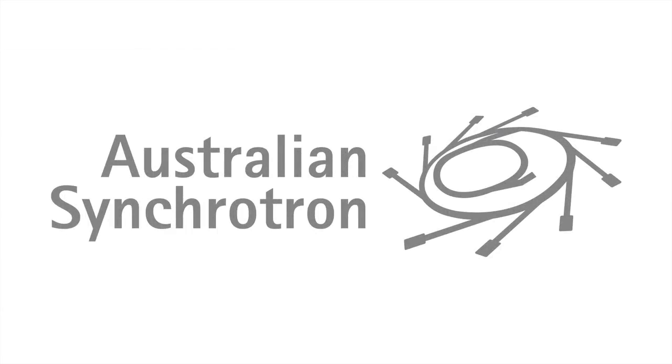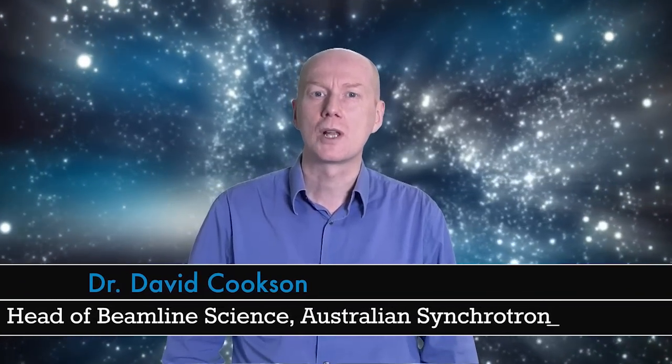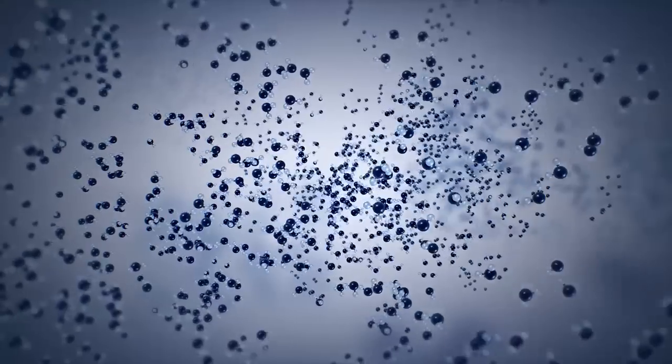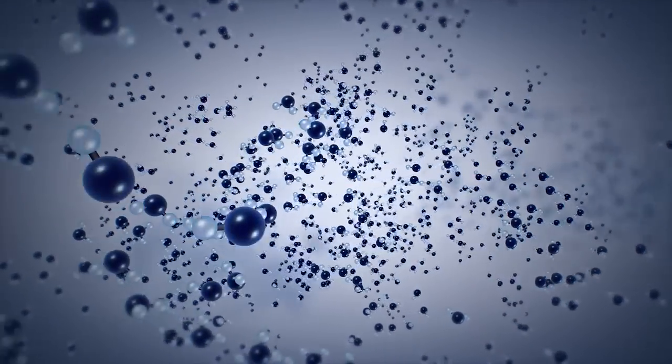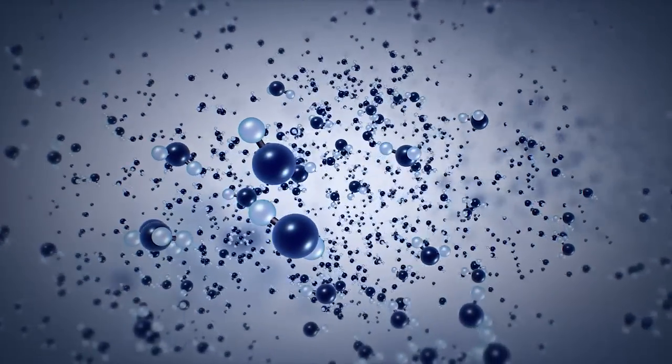I'm like everything else in the universe. I'm made of atoms. But imagine if you had a machine with the ability to visualize things at this level of detail. Sounds like science fiction? Well we actually have a machine that can do this. It's called the Australian Synchrotron.